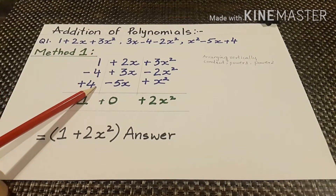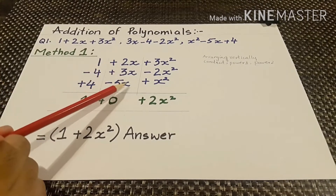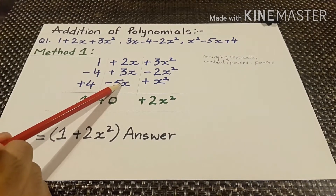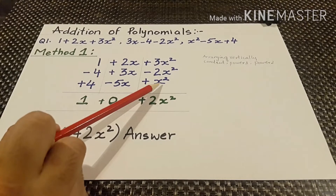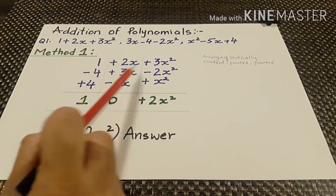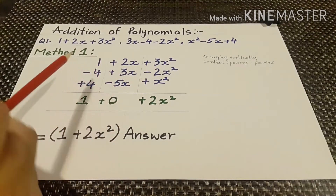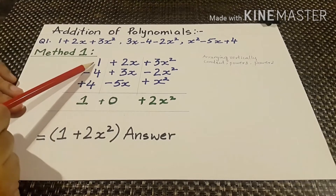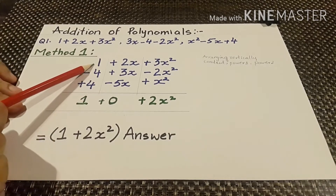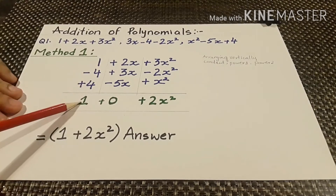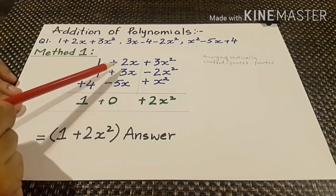In the first column we have the constant values, in the second we have the values with power 1, and in the third column we have values with x power 2. These are the terms of the polynomials. Now we have to add them. In the first column: 1 plus 4 is 5, and 5 minus 4 is 1.